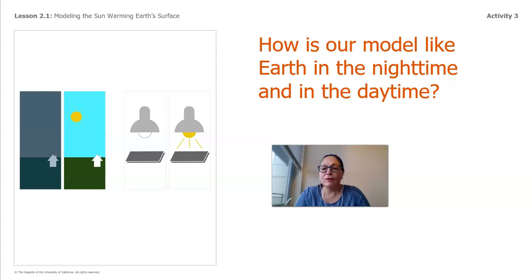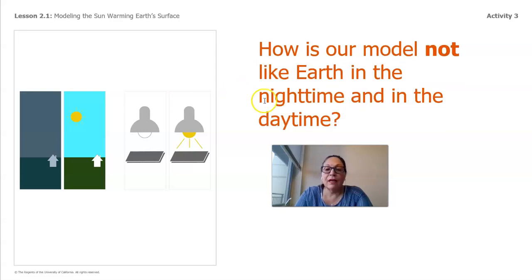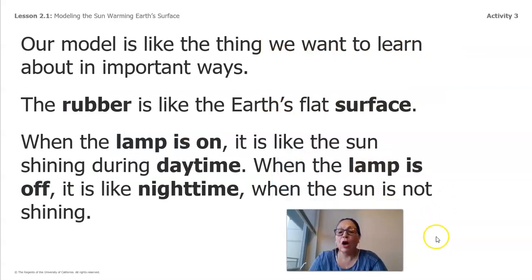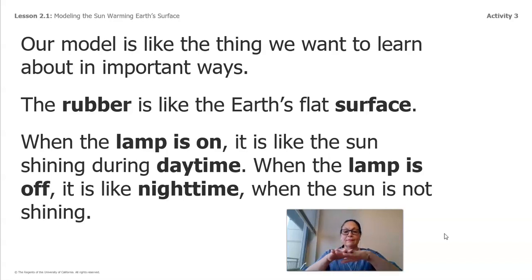How is our model like the Earth in the nighttime and in the daytime? And how is it not like the Earth? Our model is like the thing we want to learn about in important ways. The rubber is like the Earth's flat surface. When the lamp is on, it is like the sun shining during the daytime. When the lamp is off, it is like the nighttime when the sun is not shining. Did you make the same predictions? I'm sure you did.